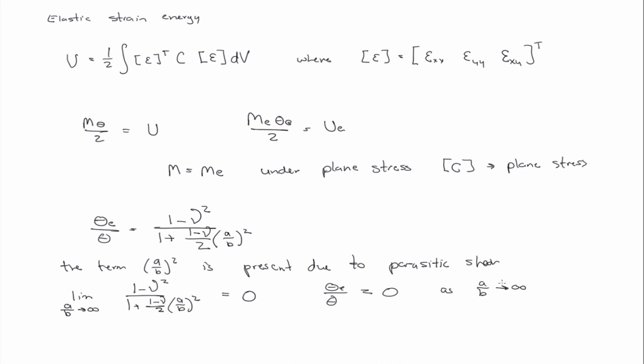So what does that imply? So the theta is the angle measure. Theta E is for the element case and theta is for the continuum case derived from beam theory, right? And if that ratio is zero, what does that mean?